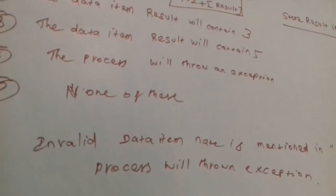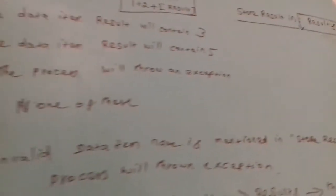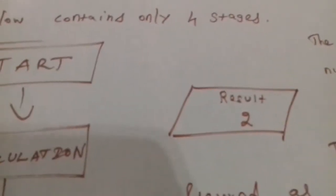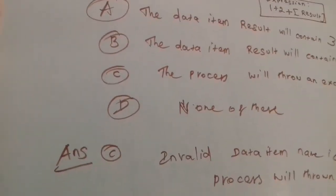The process will throw an exception. Why will it throw an exception? It is an invalid data item name mentioned in 'store result in'. Instead of 'result', it has 'results'. It has to be 'result' but it's mentioned as 'results', so because of that it throws an exception.